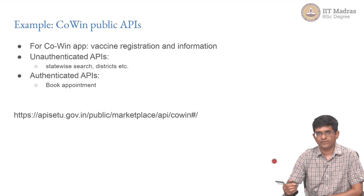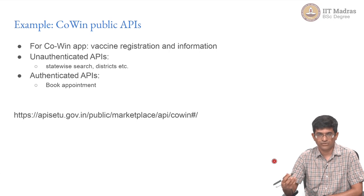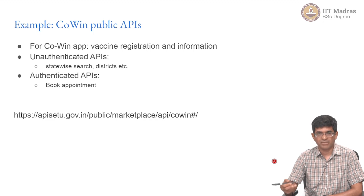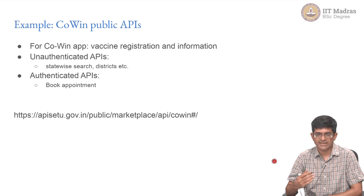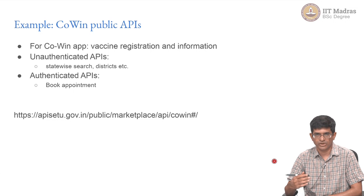It is basically used for vaccine registration and information. As you know, you can go to the cowin.gov.in website and get information about vaccine availability and book a slot for an appointment. The entire app has also been built around the notion of RESTful APIs. There is a lot of information that needs to be retrieved, and it makes sense to do that separation — you could have an app which works separately from what the backend itself is doing.